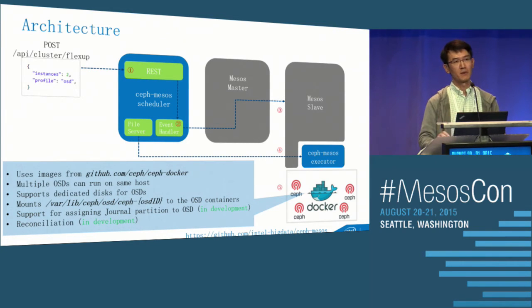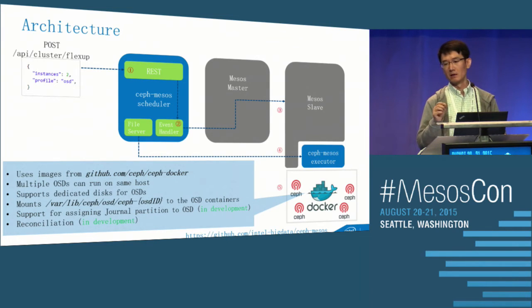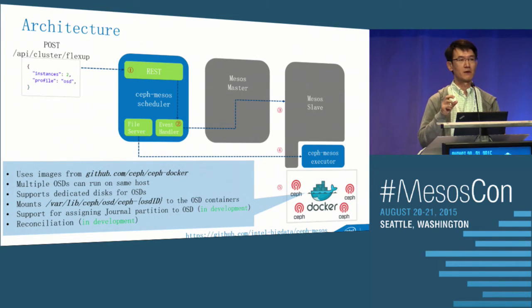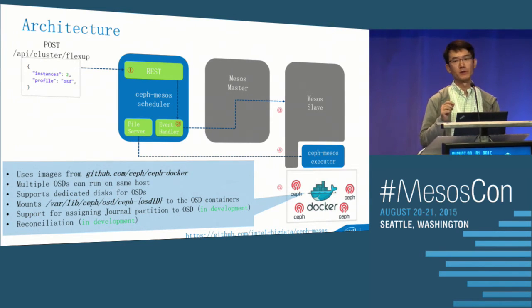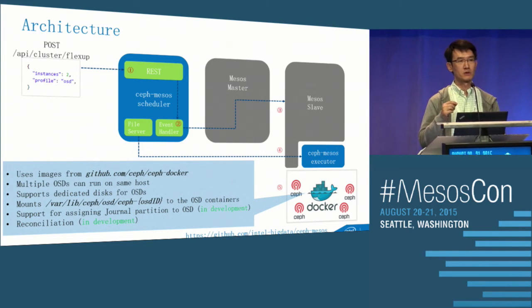That can be specified in a configuration file in the Ceph on Mesos scheduler. The configuration can be global — for all nodes, only SDB and SDC will be used by the OSD — or it can be node-specific.